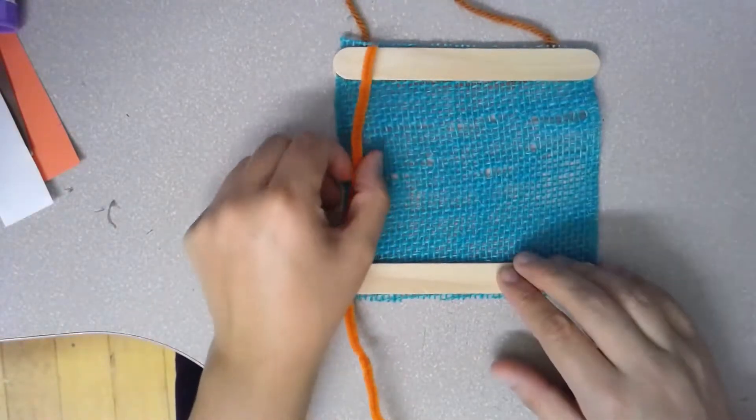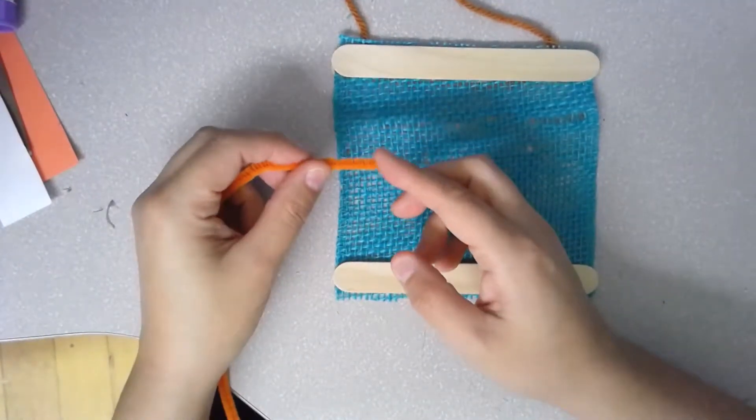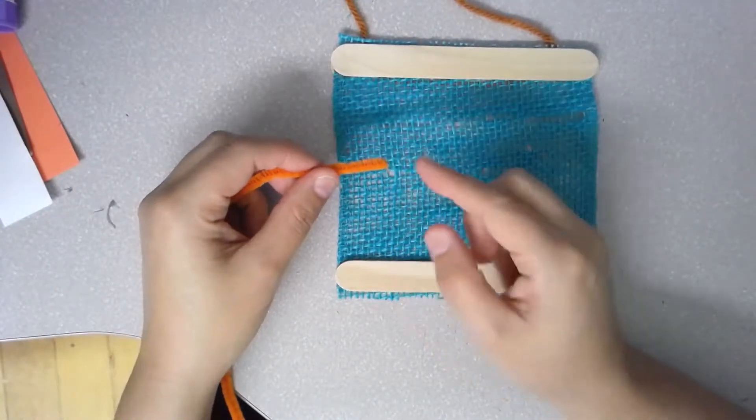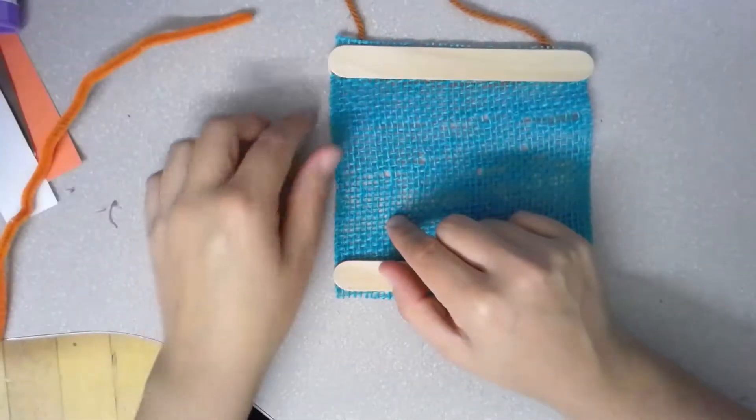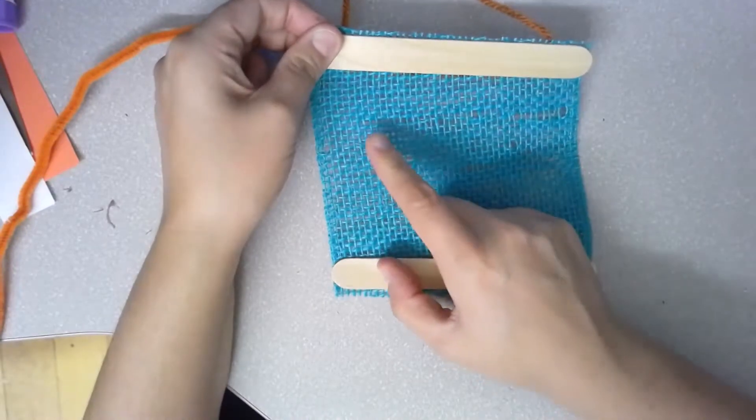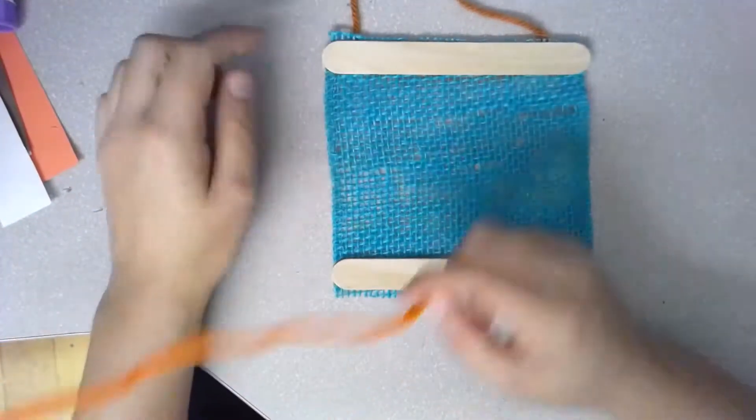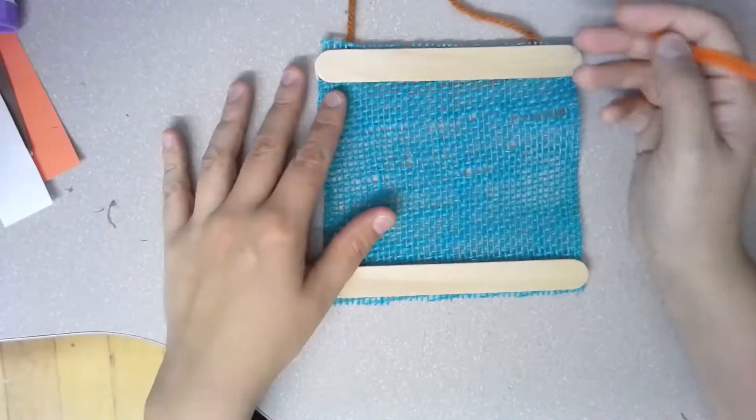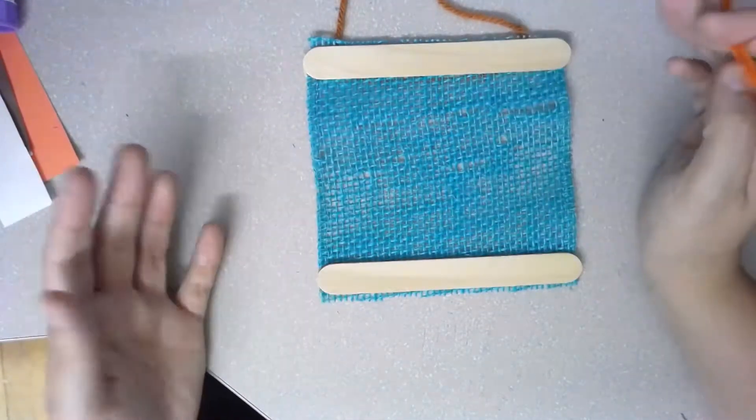To start, pick up your pipe cleaner in one hand. Find the tip. Don't press too hard, it's a little sharp. So I found the tip. I'm going to push this tip through one of these open holes. It doesn't matter where you start. I like to start closer to the top of my weaving because that gives me all the extra space down below to weave.